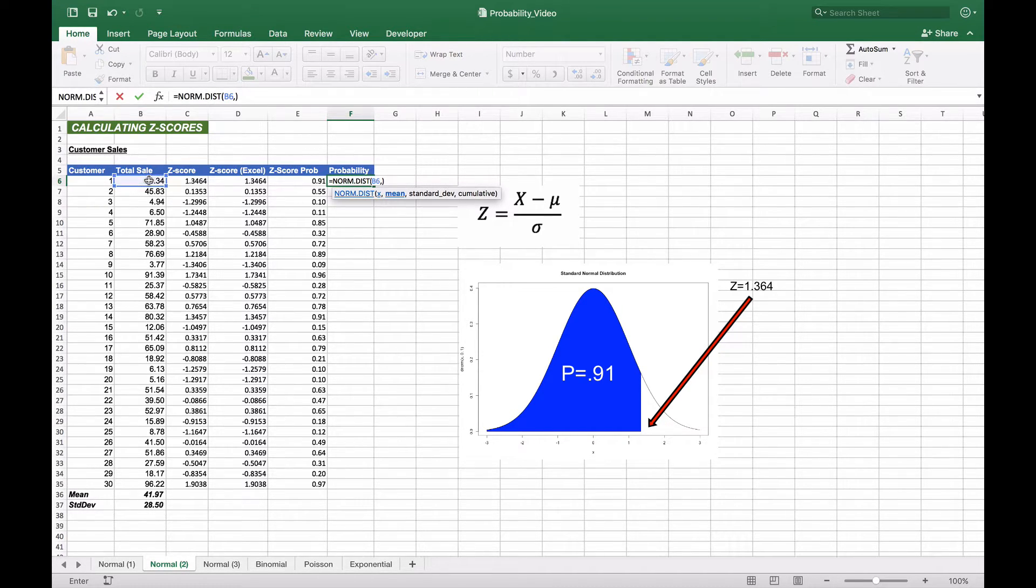And what we're going to do is we're going to include the mean and the standard deviation, which we've already calculated at the bottom of B36 and 37. Again, we'll choose the true for the cumulative distribution to give us the entire range from that point to the left.